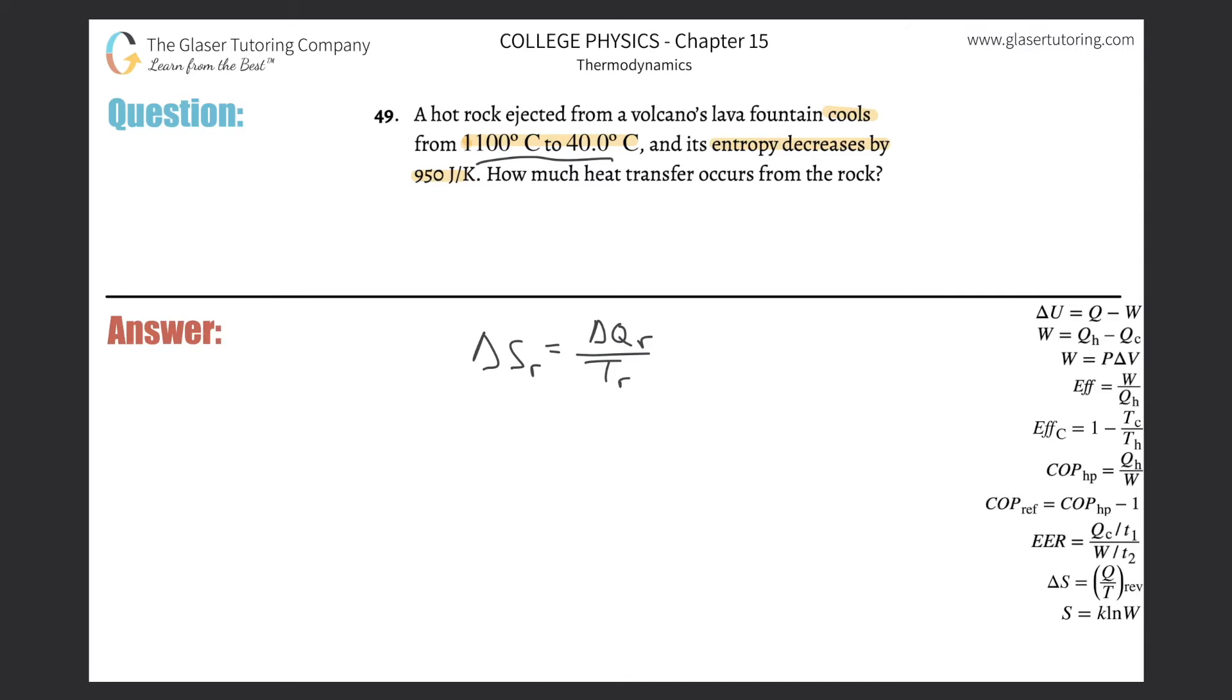It tells us the decrease in entropy was 950, so we can plug that in: 950. We're solving for the heat of the rock that was lost, divided by the average temperature.